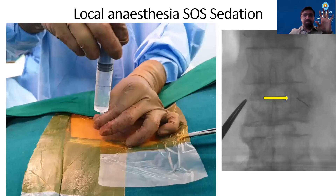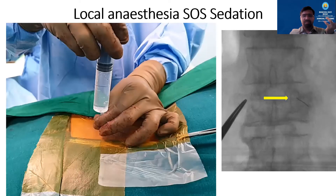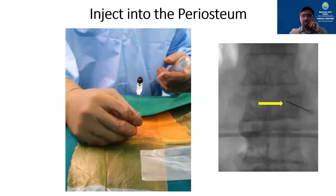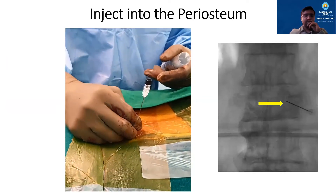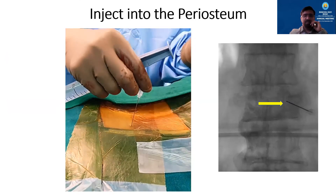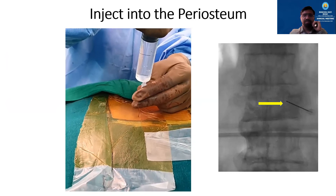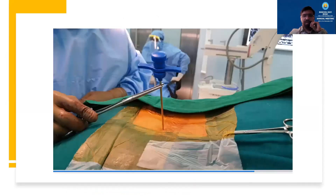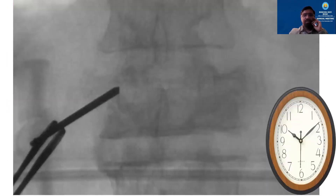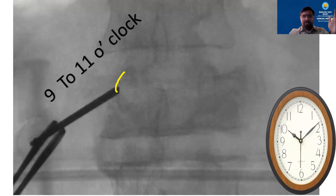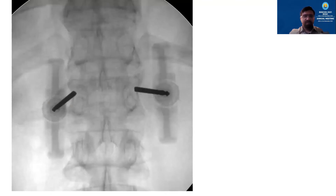Give local anesthesia. Sedation is SOS — if the patient is not tolerating, the anesthetist is ready with IV sedation; otherwise it's purely local anesthesia. First give a skin wheal, then take a spinal needle right up to the periosteum at the projected entry point and inject a good amount of local anesthesia — this minimizes the requirement for sedation. Mark the needle entry on the skin. Take a stab and land the Jamshidi needle at the upper and outer quadrant of the pedicle: on the left side between 9 and 11 o'clock, on the right side between 1 and 3 o'clock.